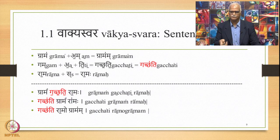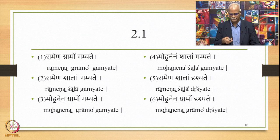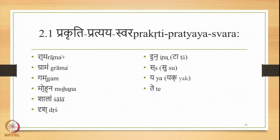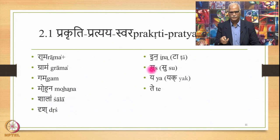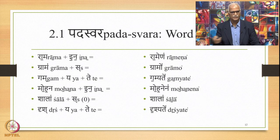Similar analysis applies to data set 2.1, with sentences 7 to 12: Ramena Gramo Gamyate, Ramena Shala Gamyate and so on. The Prakriti Pratyaya swara is explained in the same fashion; the left-hand side is the same. The right-hand side is different: the Pratyaya Ina is a Sub and therefore has Anudata vowels; Sa as a consonant cannot have Udatta. Ya is accented because of the general rule that Pratyayas are accented in the beginning; Te is also accented.